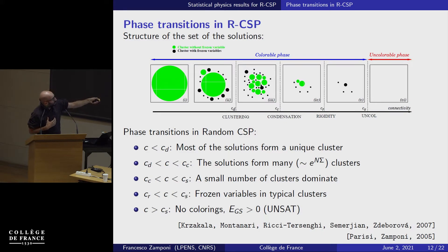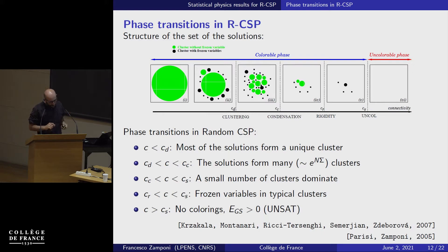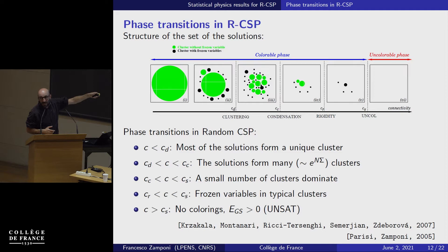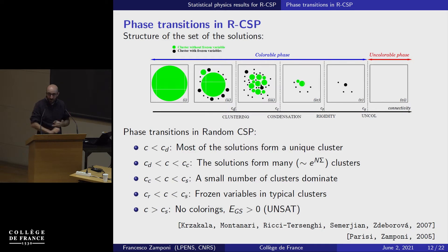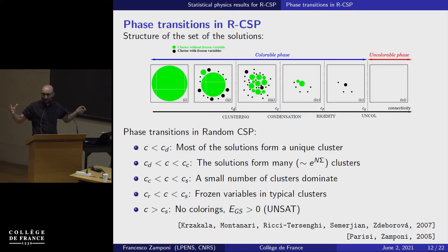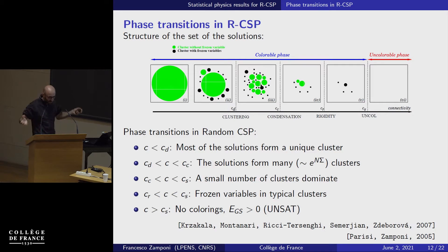However, at a certain connectivity, there is a dramatic change: the solution space breaks into separated clusters. Still exponentially many solutions exist, but they form exponentially many clusters each containing exponentially many solutions. To jump between clusters, you must change a finite fraction — order n — of colors simultaneously, triggering a large avalanche. This is a qualitative change in the solution space structure.